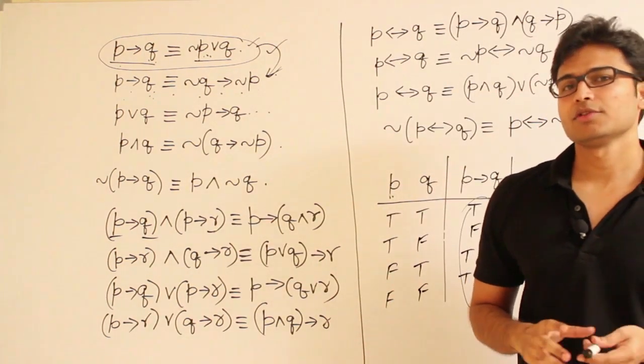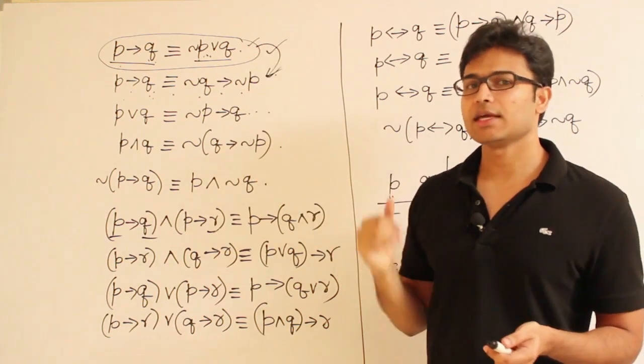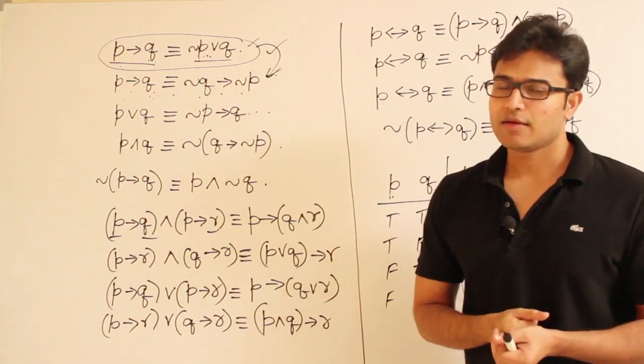Which means, you are supposed to check this for three variables. So, they are going to give us eight rows in the table.